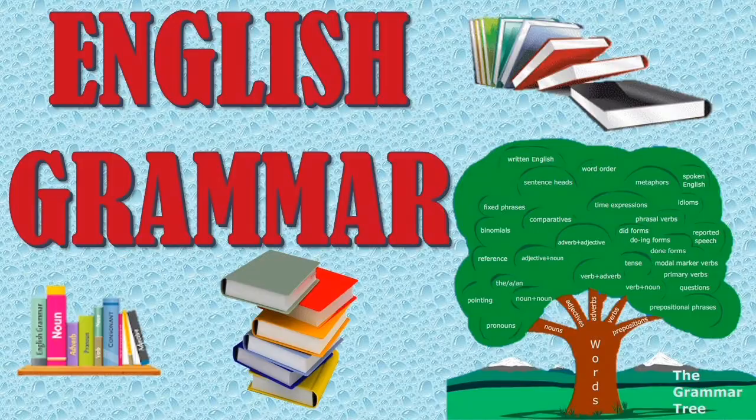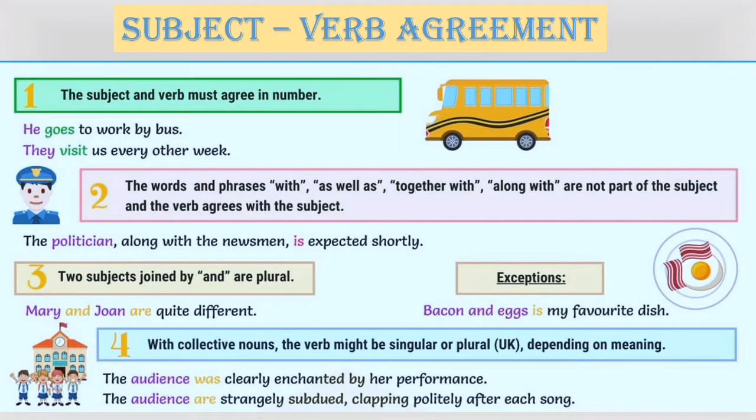English Grammar: Subject-Verb Agreement. The subject and verb must agree in number. For example, he goes to work by bus.